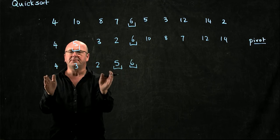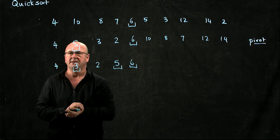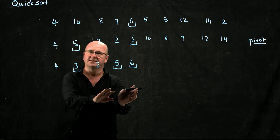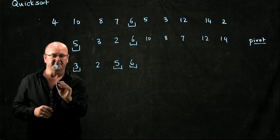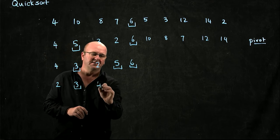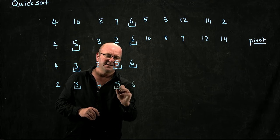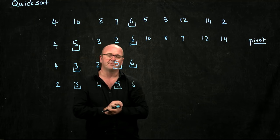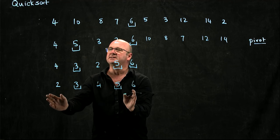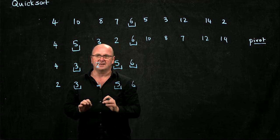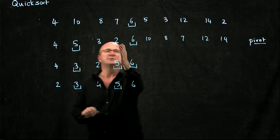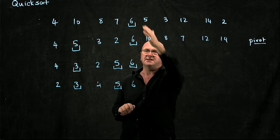Now we choose another pivot point, in this case the 3, and we move the smaller things to the left and the larger things to the right. So we've got the 2, the 3 that stays where it is, the 4, the 5, and the 6. And so we've sorted the left-hand side of the list. Notice that the 4, the 5, the 3, and the 2 got compared to the 6 initially.